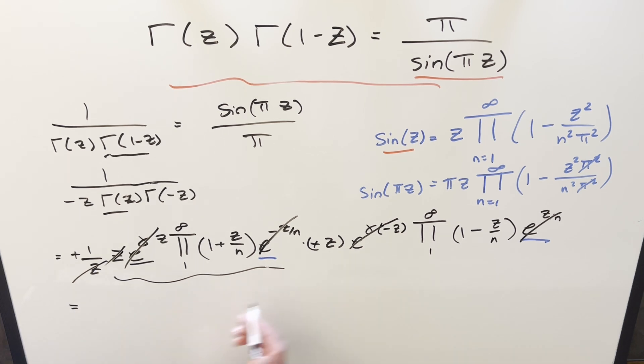And so let me clean it up and we can see what we have left. We have this one z out front. This is going to be z, big product. And then we just need to multiply these two together. And what we're going to get is 1 minus z squared over n squared.